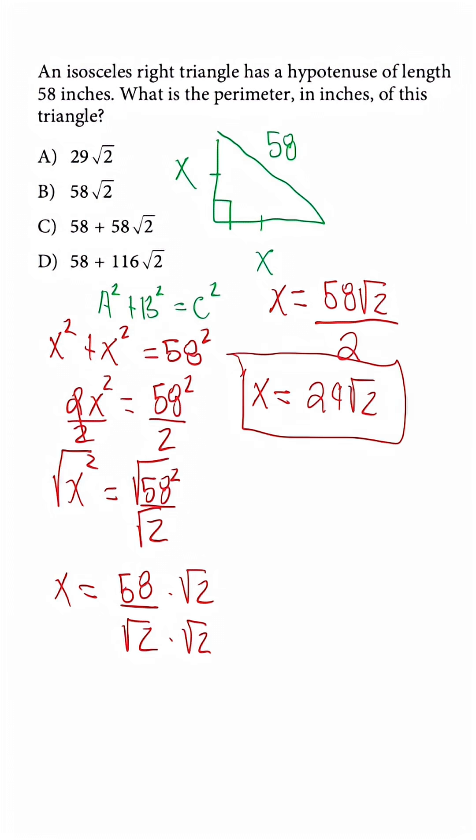So 29 radical 2 is the side length for one of the legs. So now to find the perimeter all we need to do is combine.